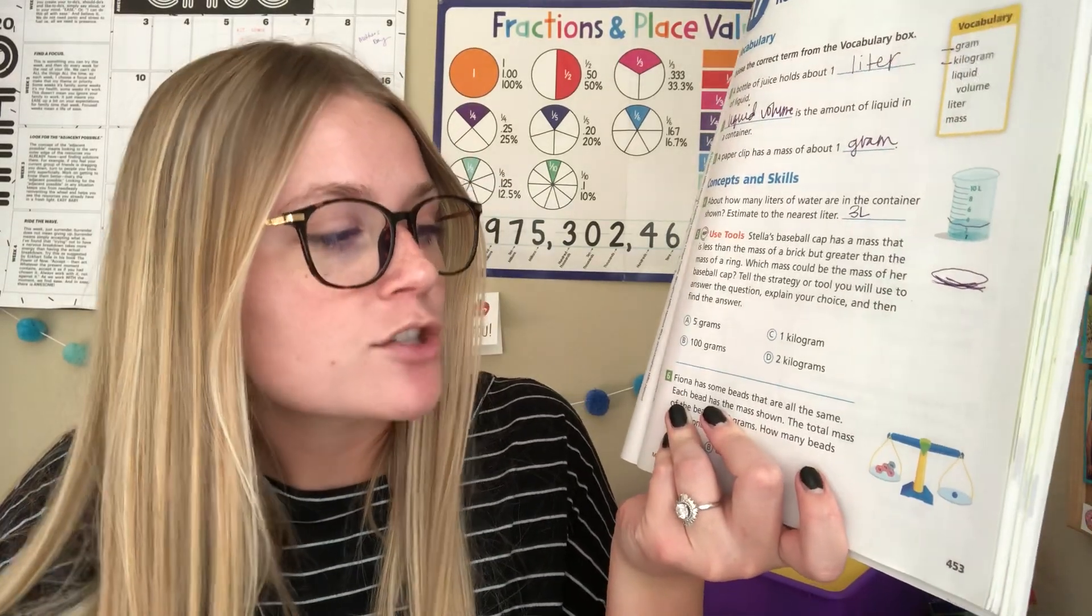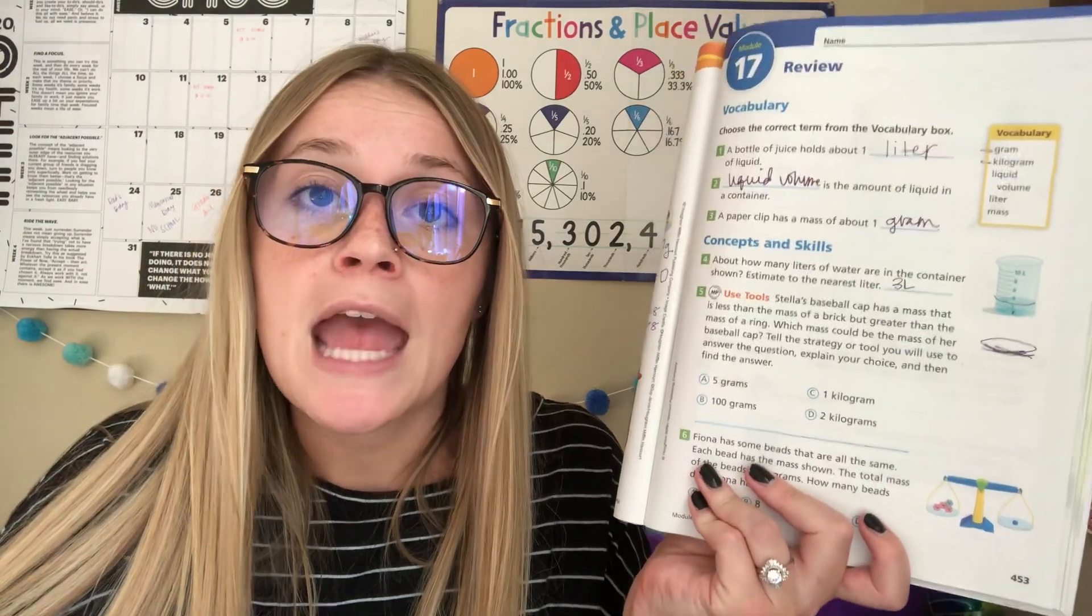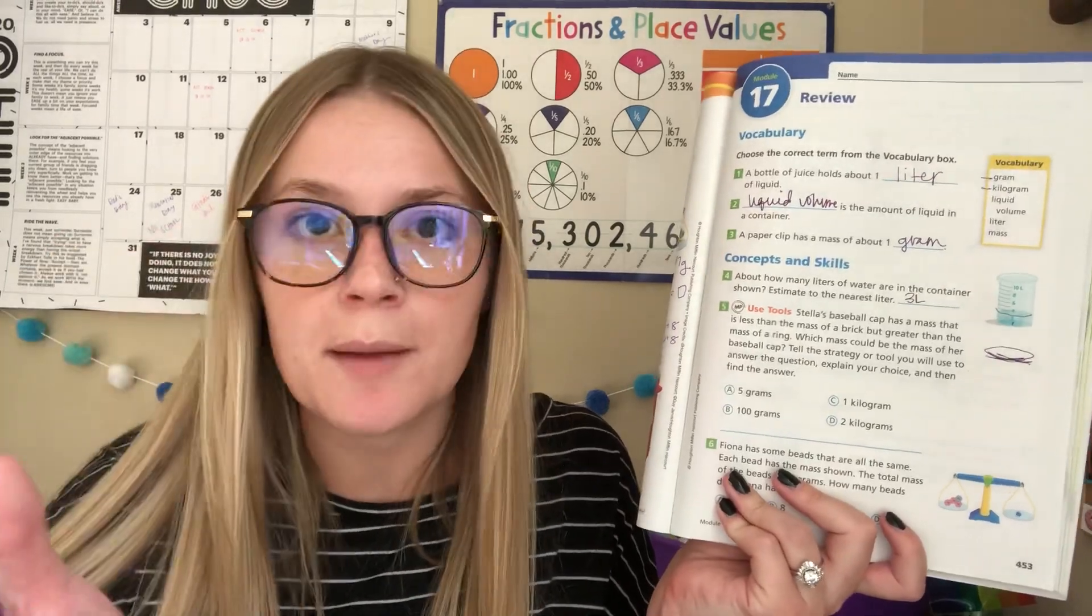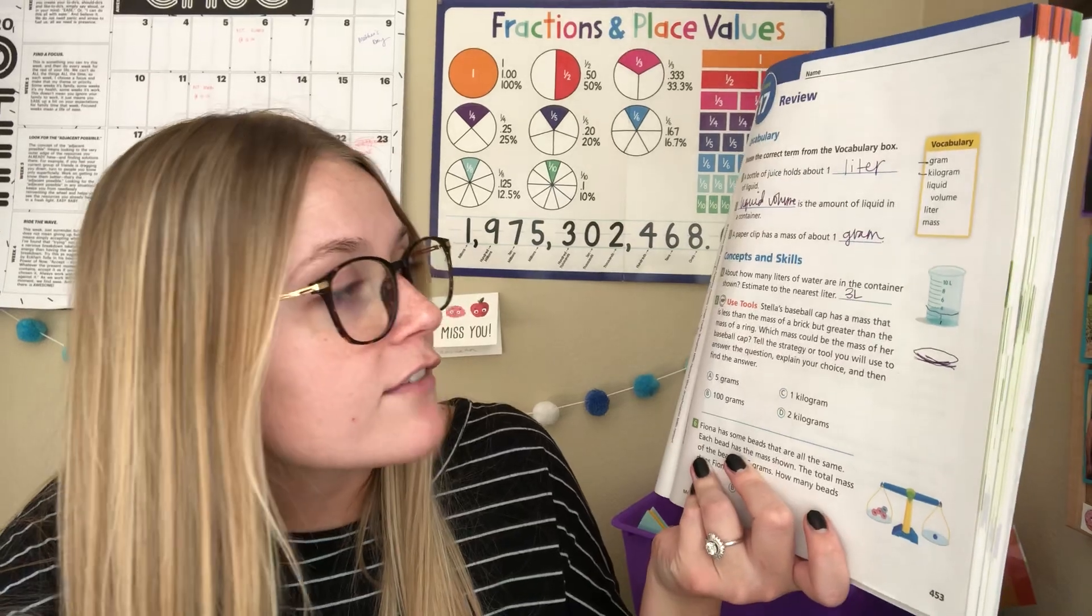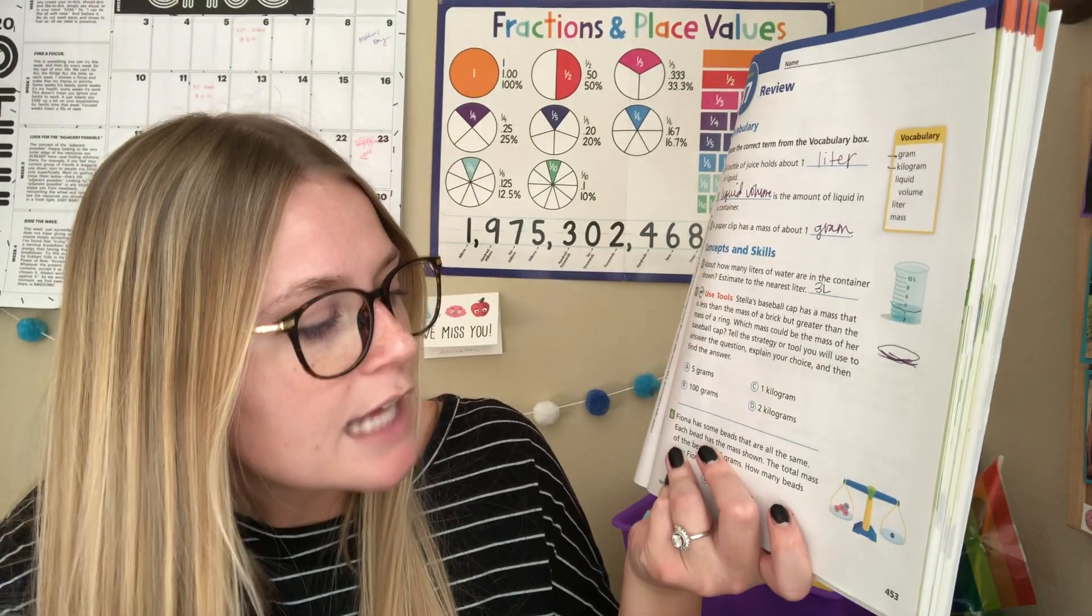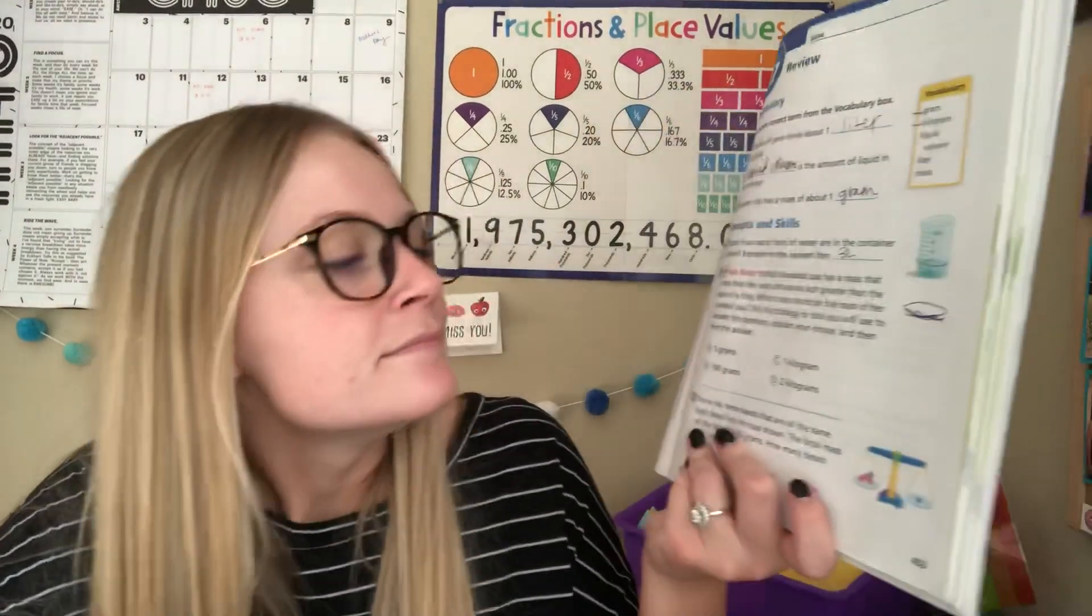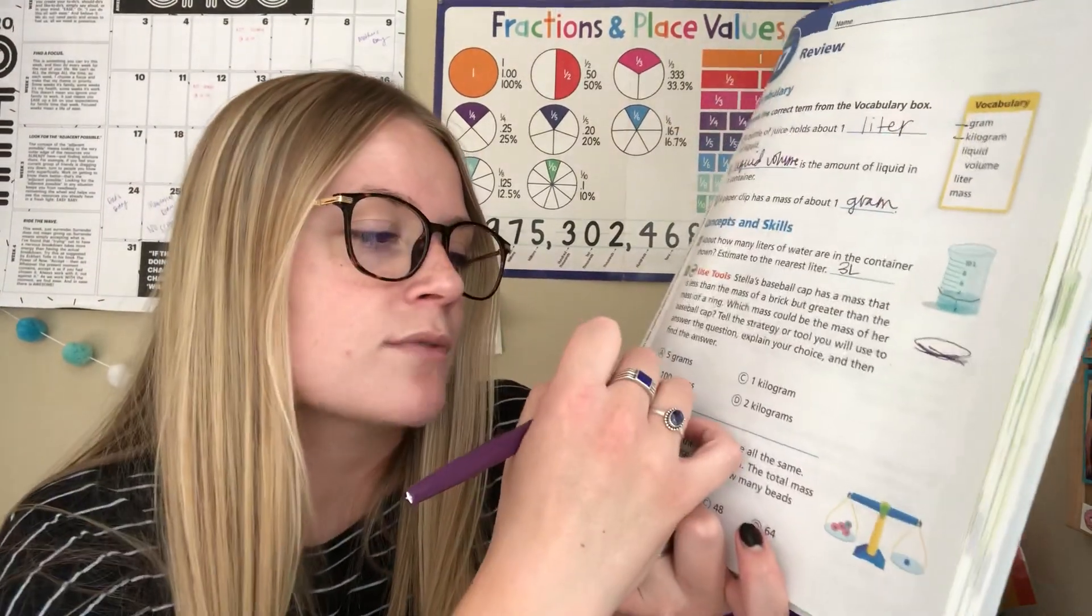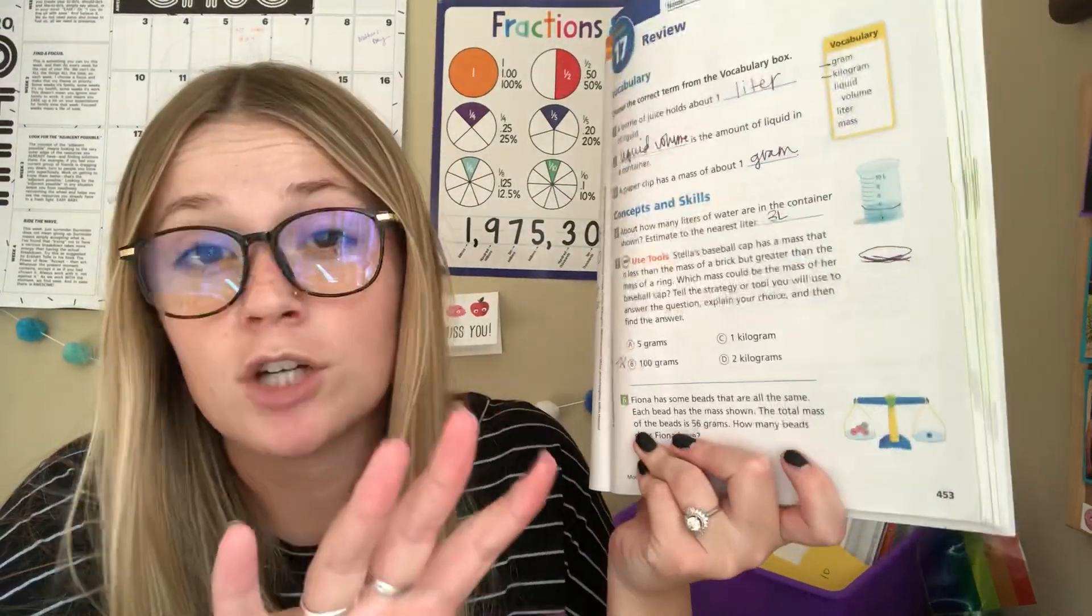Part B says 100 grams. So now we're taking our benchmark, the paper clip, and timesing 100. So think of 100 paper clips. That's quite a lot. That's going to be some weight. Or we could think of it as part of a textbook. So it'd be one tenth of a textbook. And so that seems about right. So I think that's our best guess right now, but I'm not going to circle it yet. I'm just going to put a star by it and double check the rest of our options.